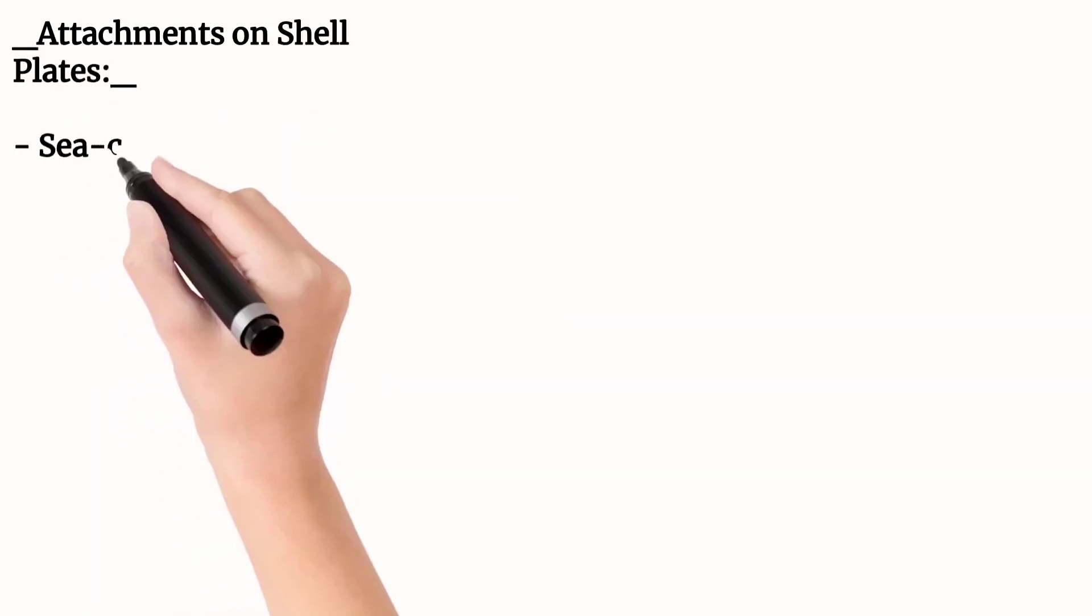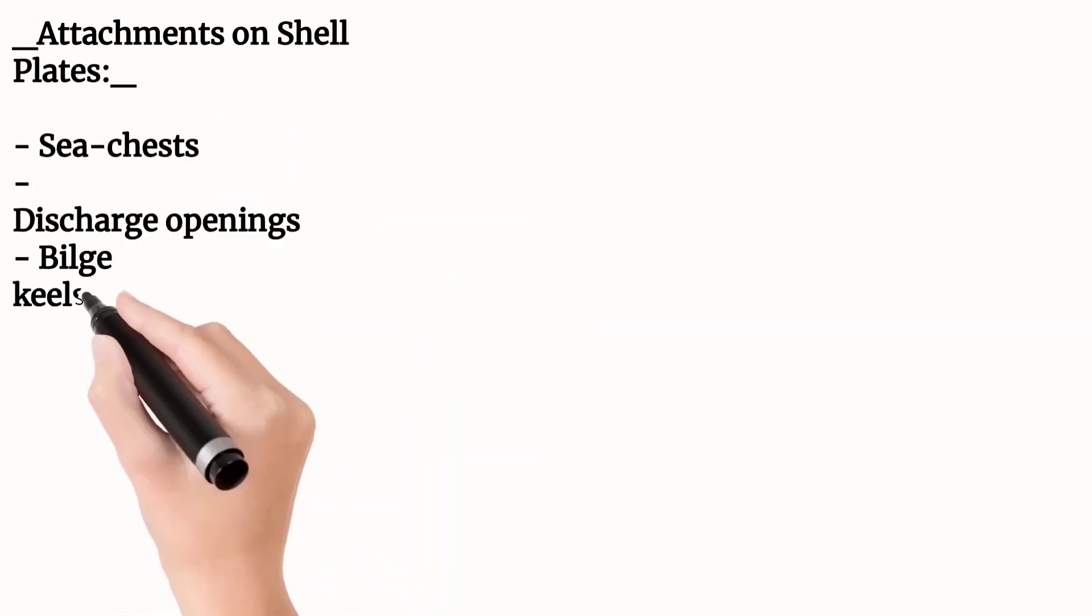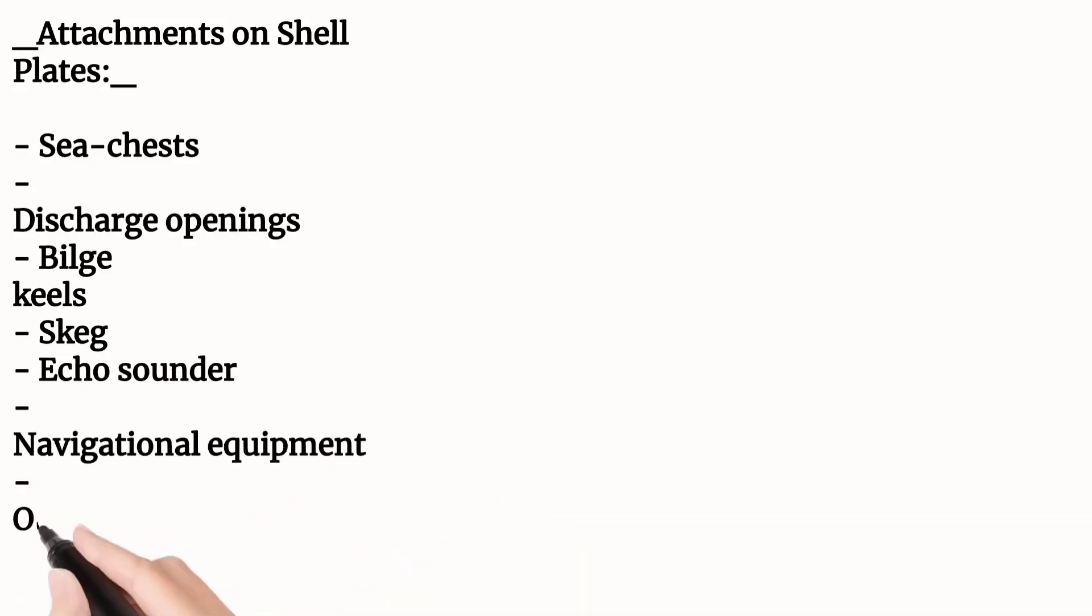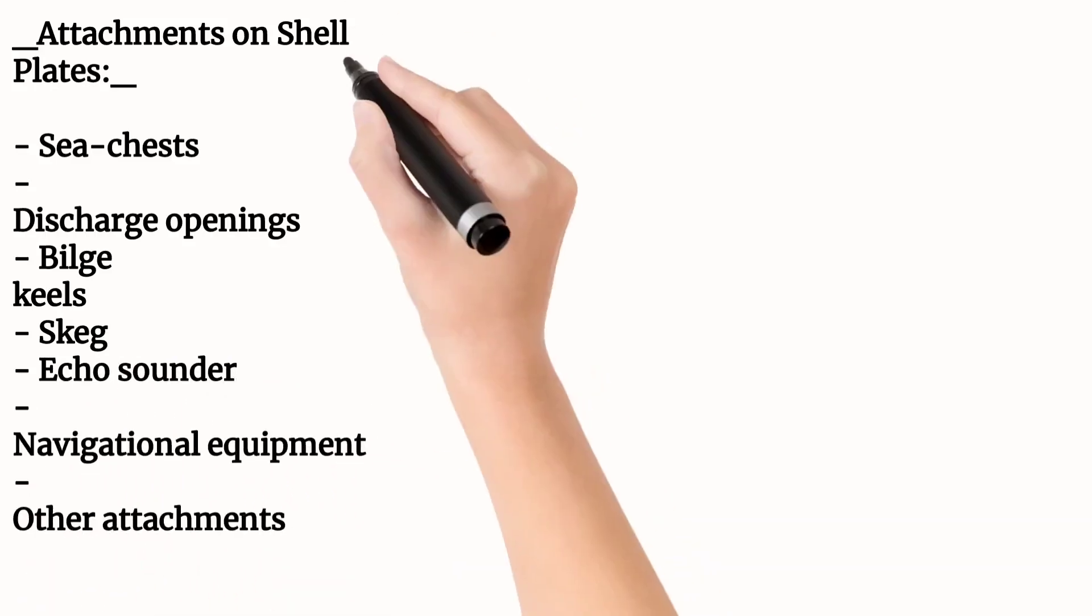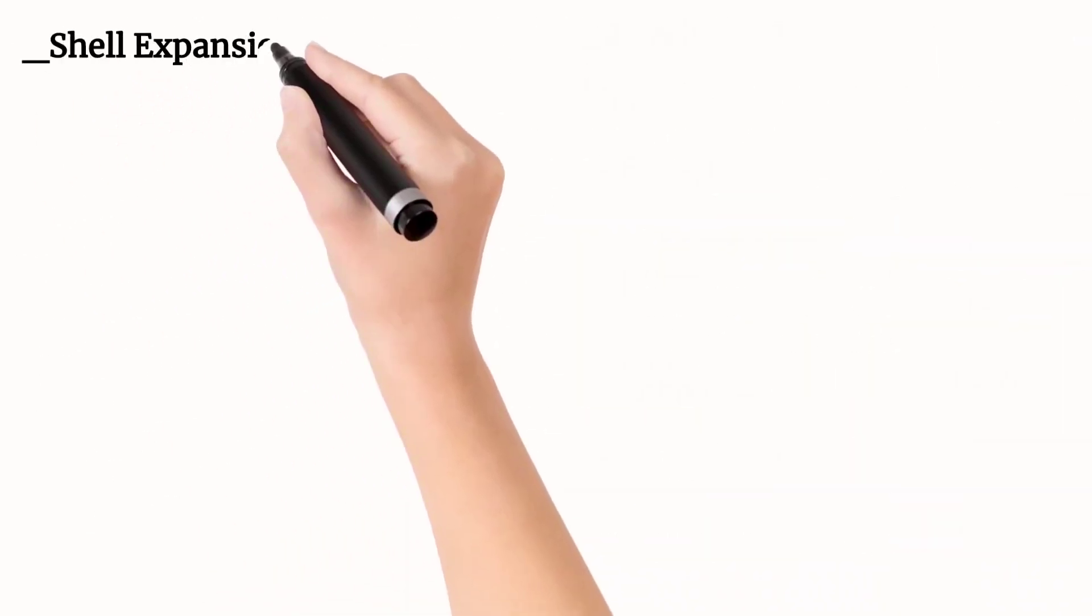Now let's see the attachments on the shell plates. We have sea chest, the discharge openings, the bilge keel, we have skeg, the echo sounder and other navigational equipments. In this picture you can see the sea chest.